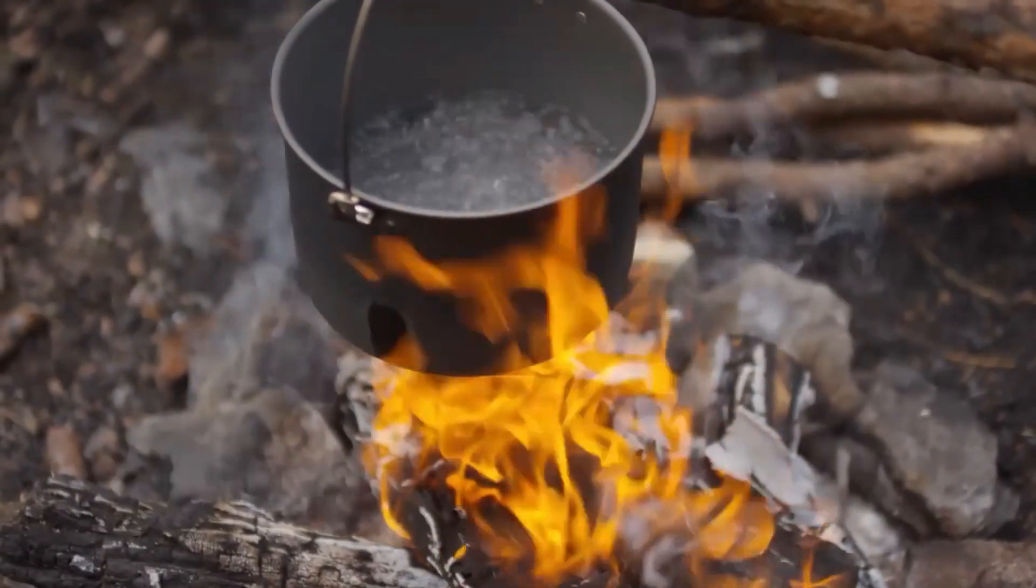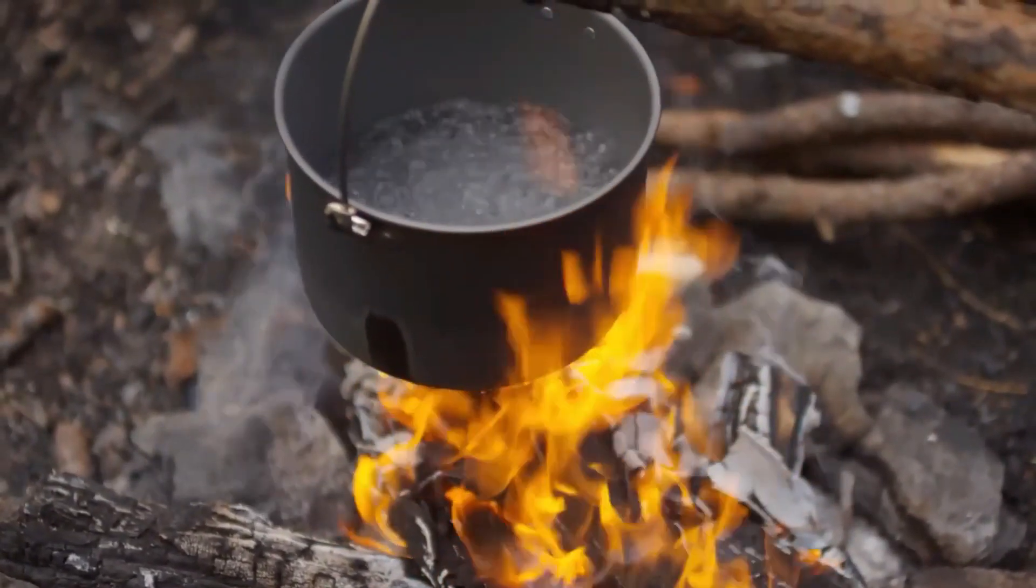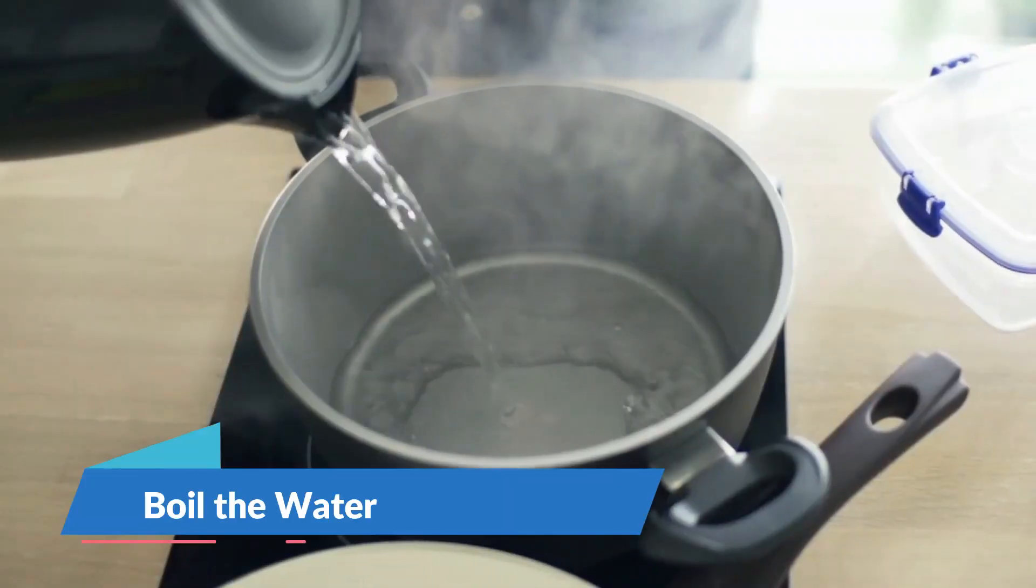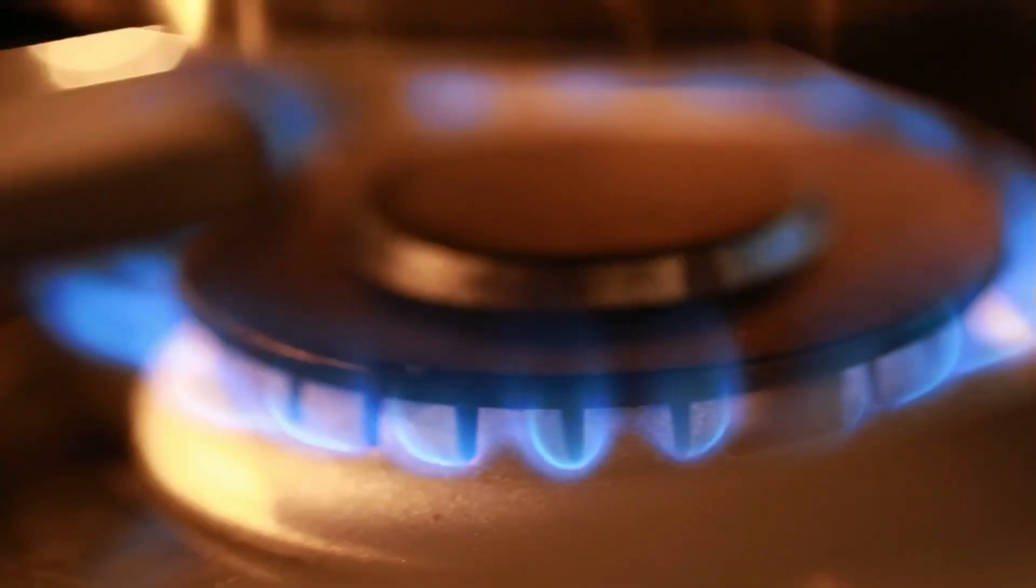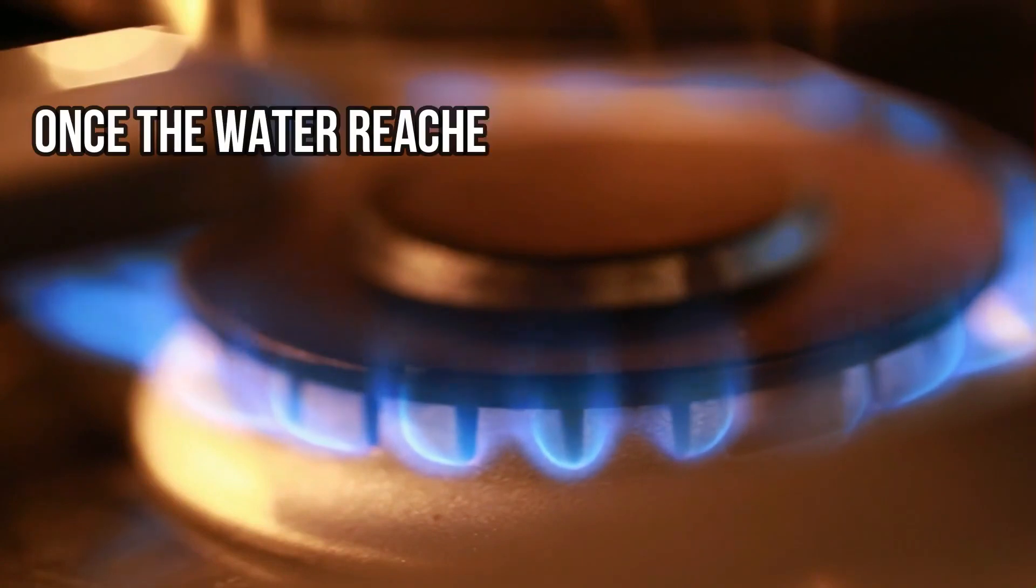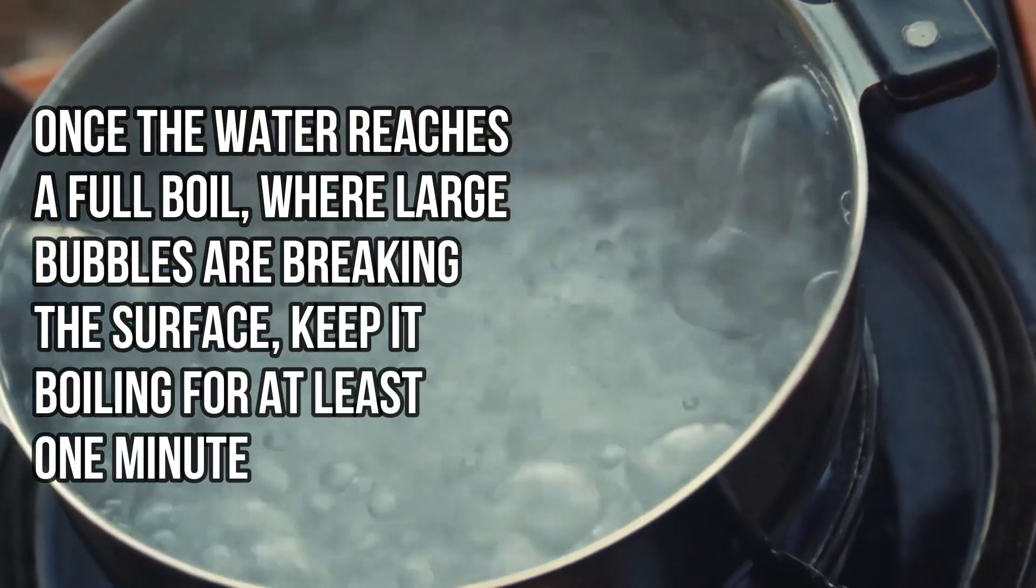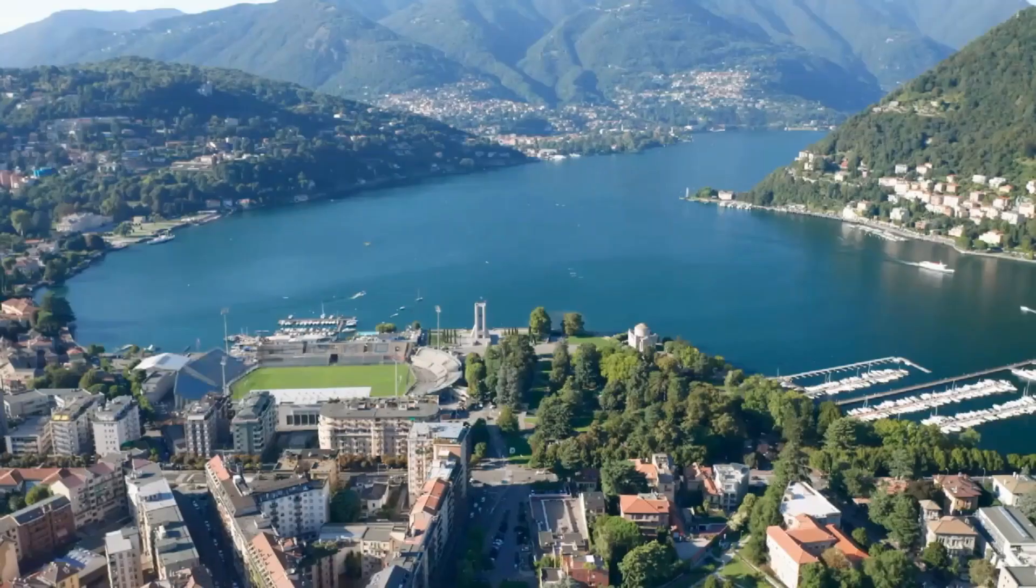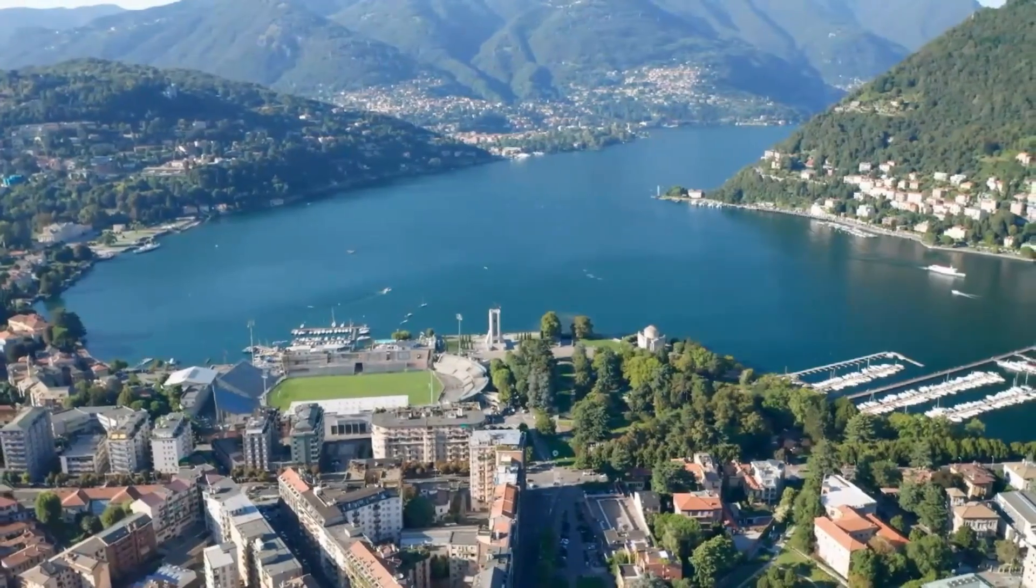Step 3: Boil the water. Place the pot on the stove or over your heat source. Turn the heat to high and bring the water to a rolling boil. Once the water reaches a full boil, where large bubbles are breaking the surface, keep it boiling for at least one minute. At altitudes above 5,000 feet, about 1,500 meters, extend the boiling time to three minutes because water boils at lower temperatures at higher elevations, which can affect its germ-killing efficiency.